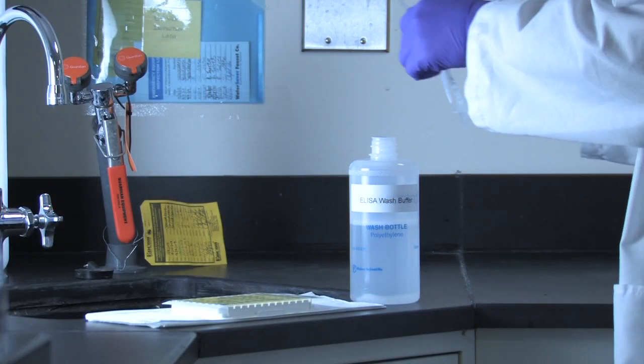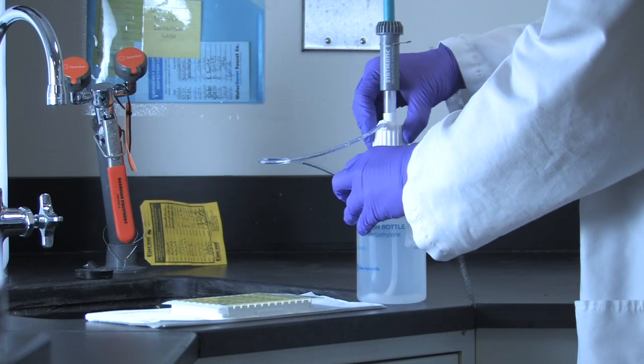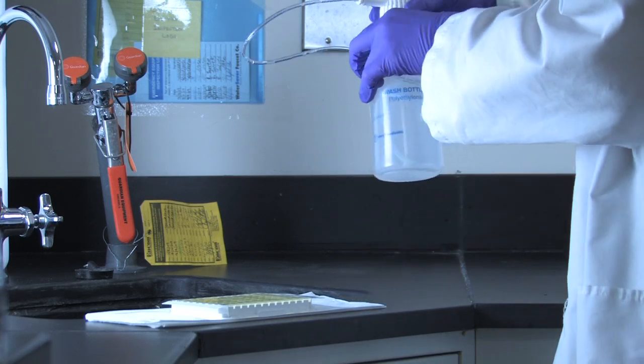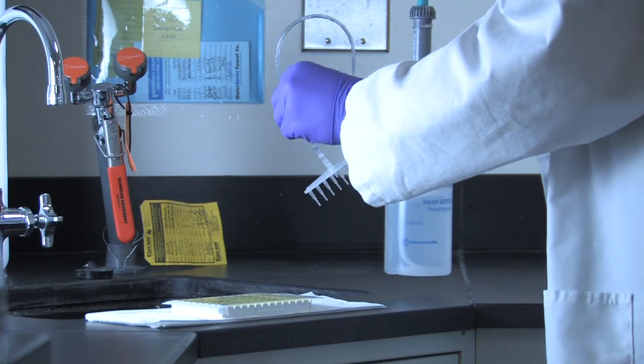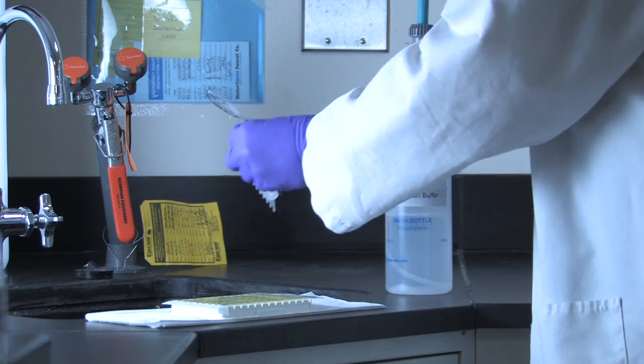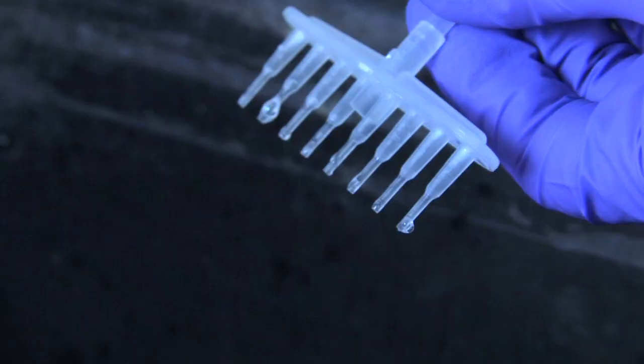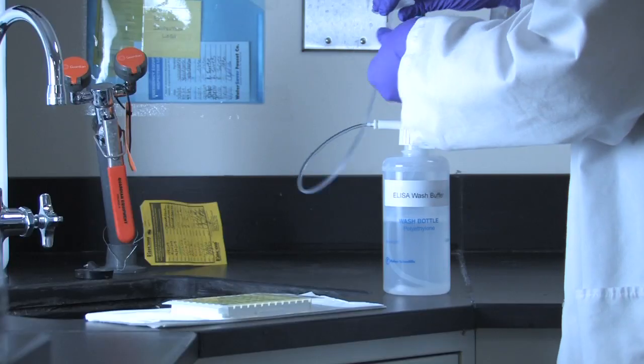Prepare wash buffer as specified in the protocol. Transfer the wash buffer to a clean polyethylene bottle and attach the appropriate wash nozzle or statmatic dispenser. Prime the dispenser until all bubbles have been removed.